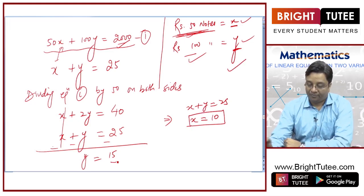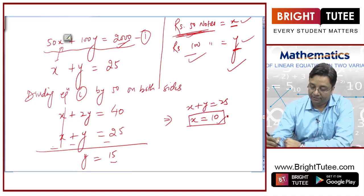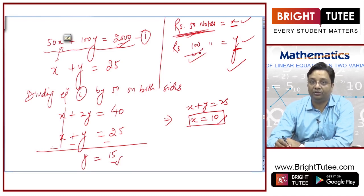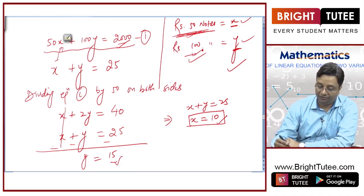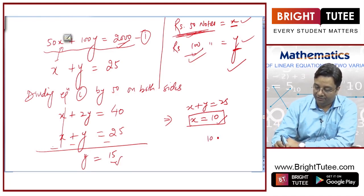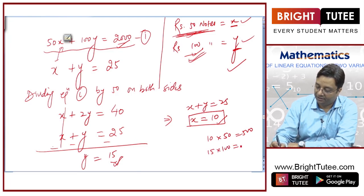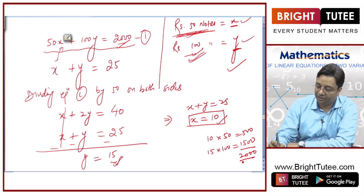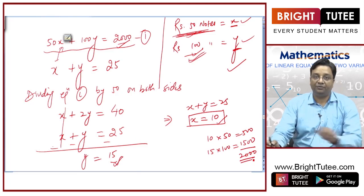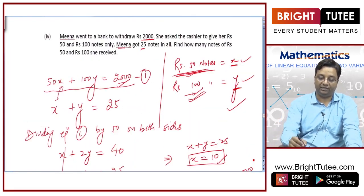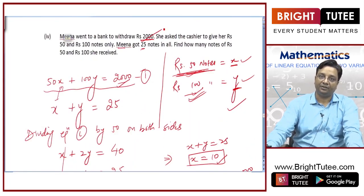She has got 10 fifty-rupee notes and 15 hundred-rupee notes. If you verify: 10 fifty-rupee notes means 500 rupees, and 15 hundred-rupee notes mean 1500 rupees. In total it is 2000 rupees, which verifies the original statement.